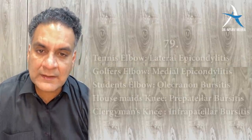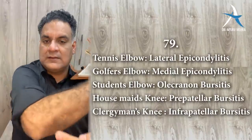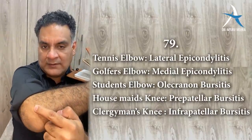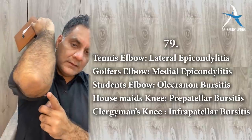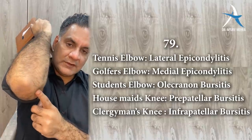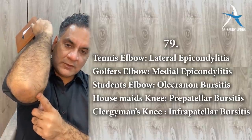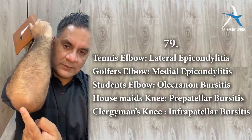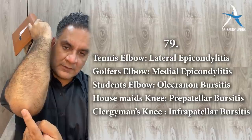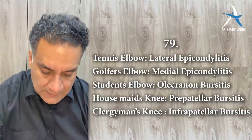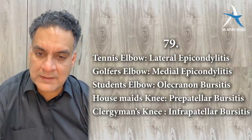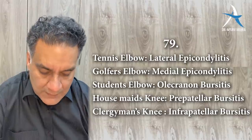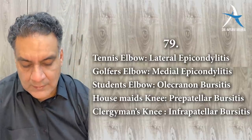Point number seventy-nine: tennis elbow is lateral epicondylitis. Golfer's elbow is medial epicondylitis. Student's elbow is olecranon bursitis. In the knee: housemaid's knee is prepatellar bursitis, and clergyman's knee is infrapatellar bursitis.